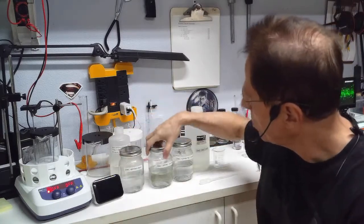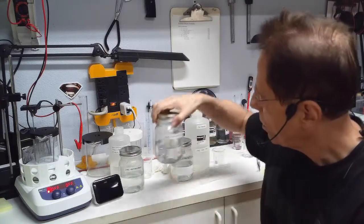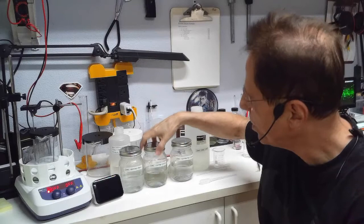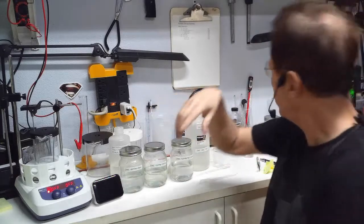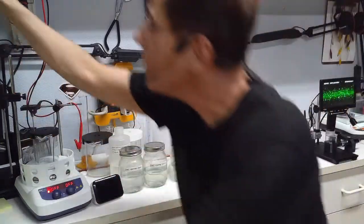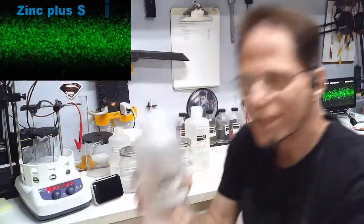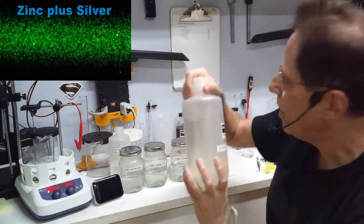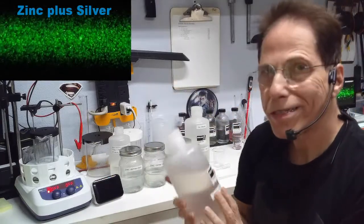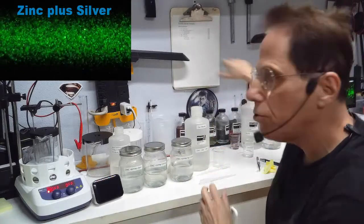I would do the 15 parts per million for taking internally. Now as I've said before, zinc is great when mixed with silver colloidal silver. Here's my big jug of colloidal silver. What I like to do with the zinc these days is mix 20% zinc, 80% silver.